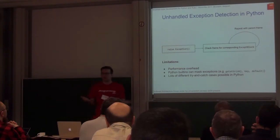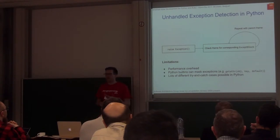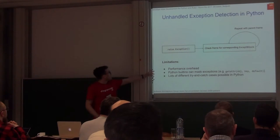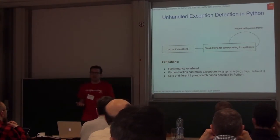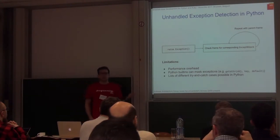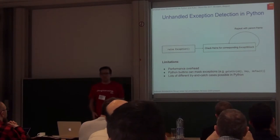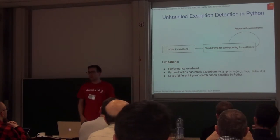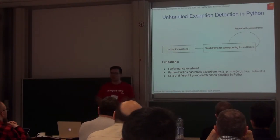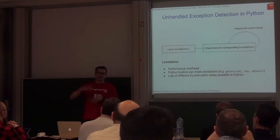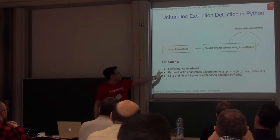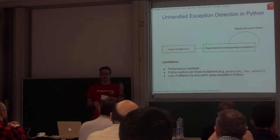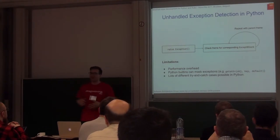Something we had to deal with was exception detection, which is quite hard in Python because Python is not designed to do all of this. When you get an exception in Python you can inspect it and then you're done — you can't resume, you can't continue and edit. So whenever we raise an exception, we have to inspect the current frame for a corresponding except block, and we do this for all parent frames to detect whether the exception will be caught or not. Otherwise the stack is unrolled and we can't do anything anymore, but in Smalltalk we want to see the full stack in the debugger. There is some performance overhead, but that's usually not a big problem because you don't have too many frames and an except block usually isn't too far from where the exception is raised.